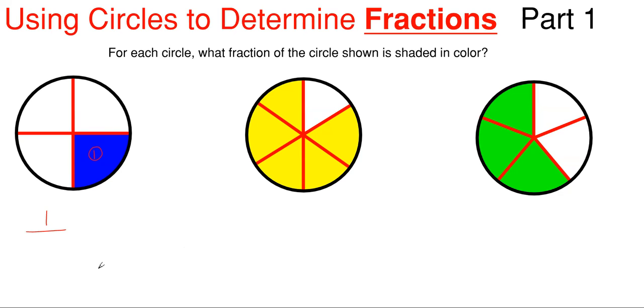How many total portions of this circle do we have? Well, we have one, two, three, four. So we have four total portions here, and that would be our denominator in the bottom.